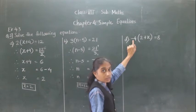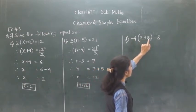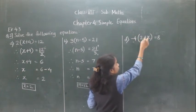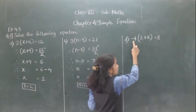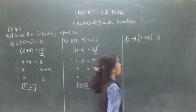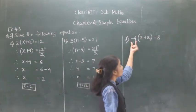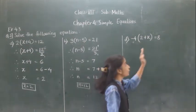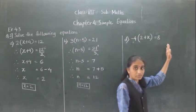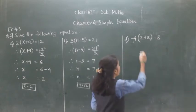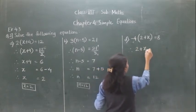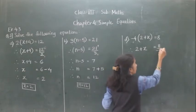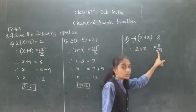Now what we are going to do here — this minus 4 we are going to transfer to the right hand side. Minus 4 is here as multiplication. If it comes to this side, it will become division. So 2 plus x is equal to something divided by minus 4.